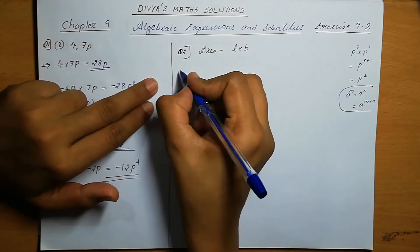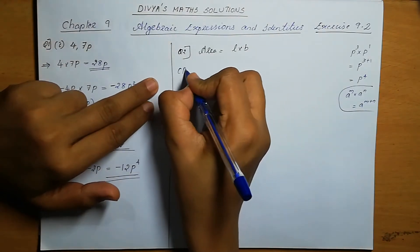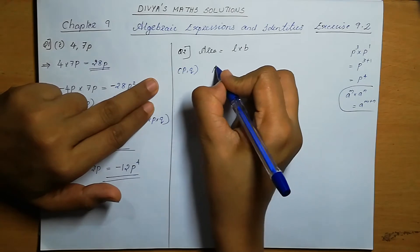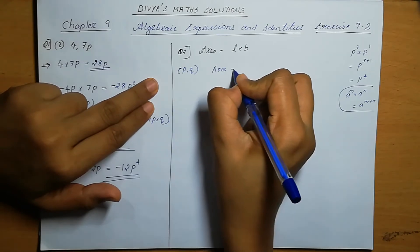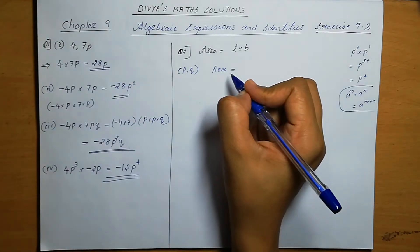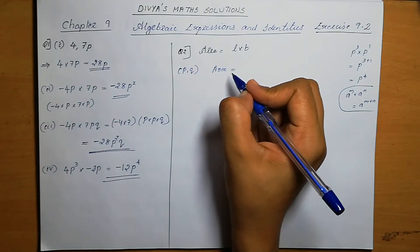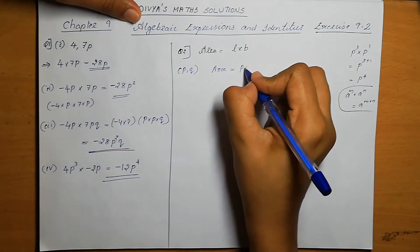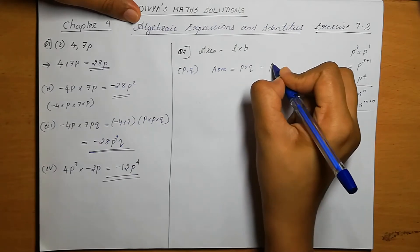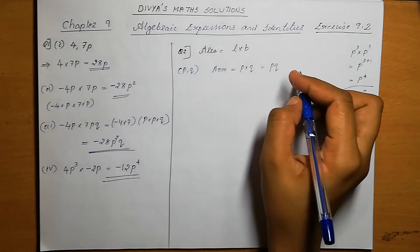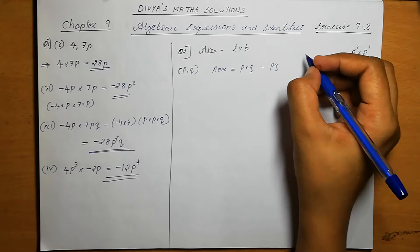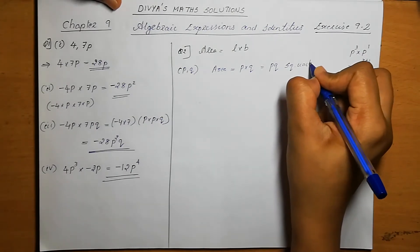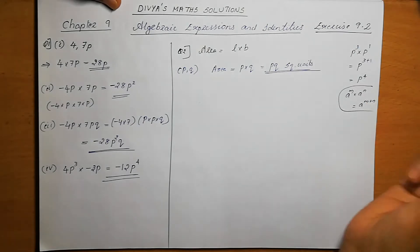First one: p and q. Area is equal to p into q, which is pq. Area means we need to write the unit too — square units. So the area is pq square units.